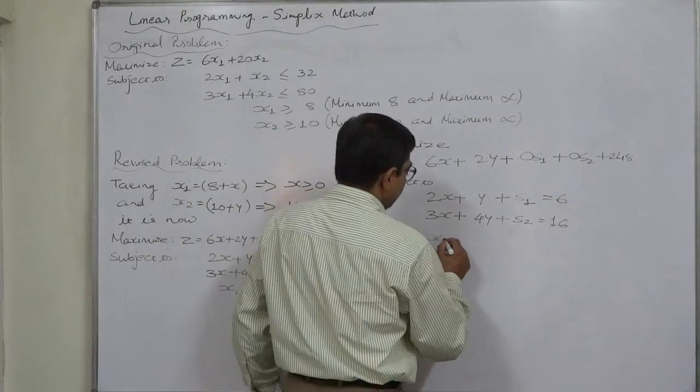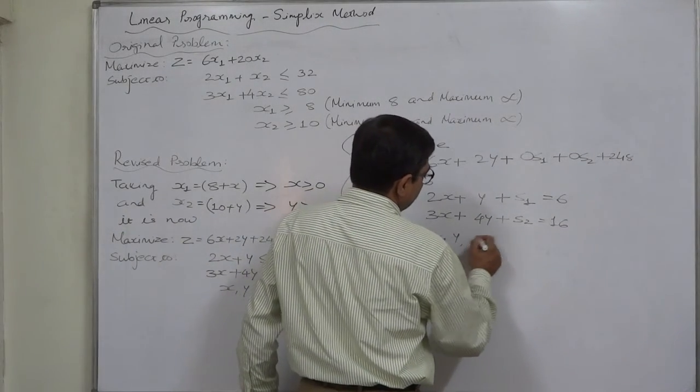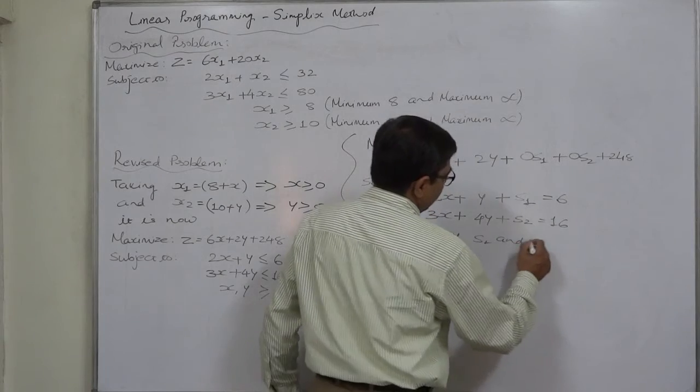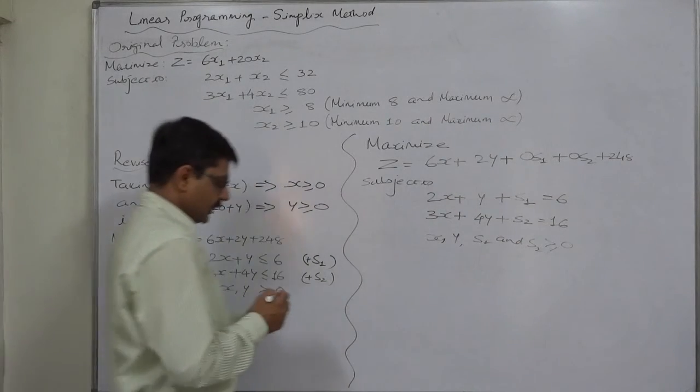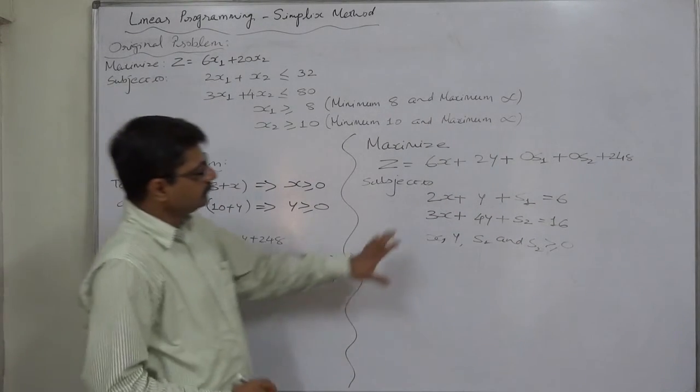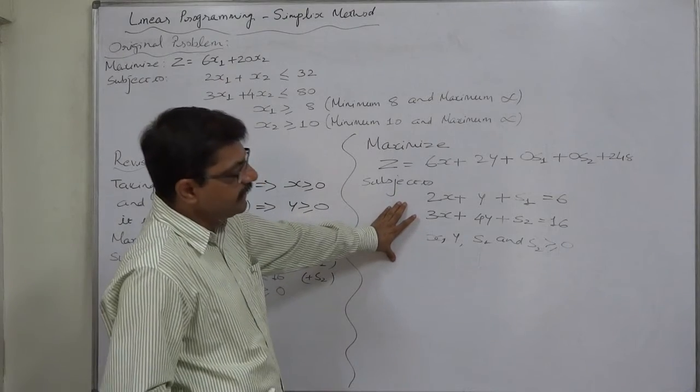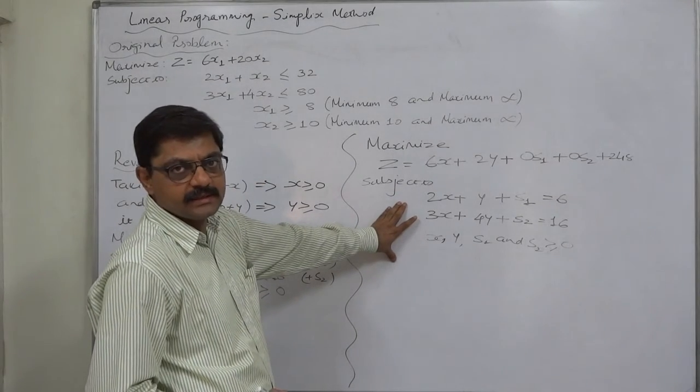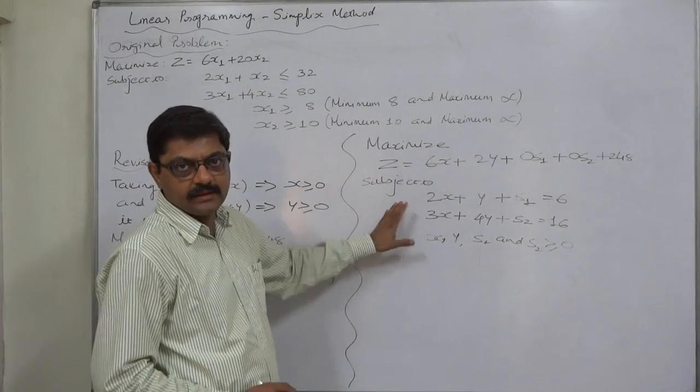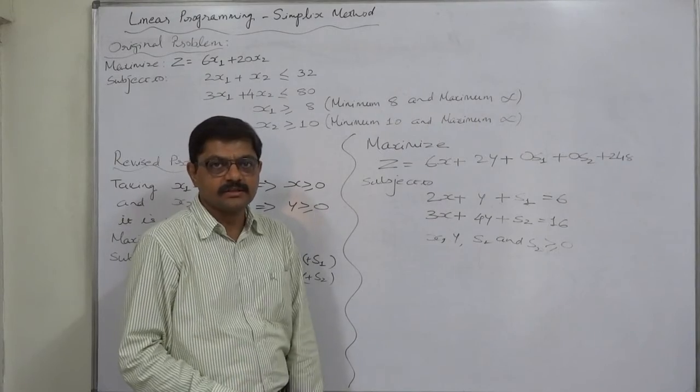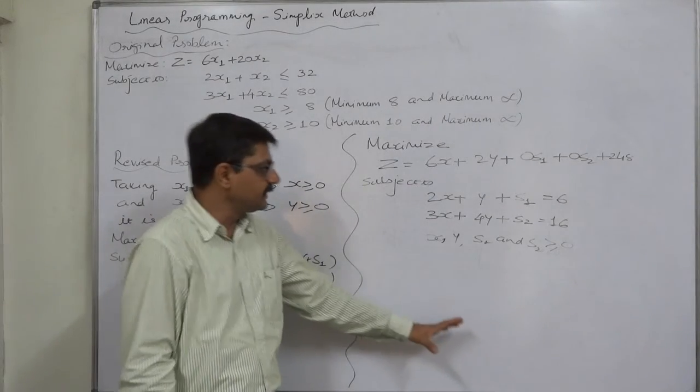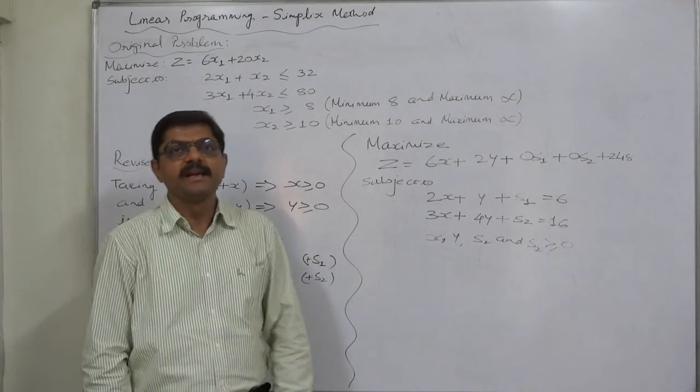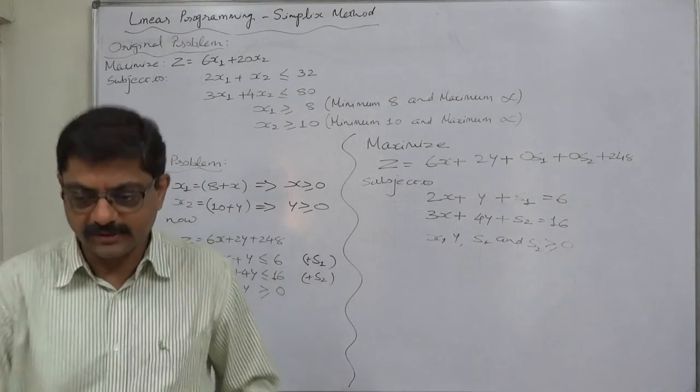And now we have four variables x, y, s1 and s2 all are non-negative. Now we can solve this problem having two equalities through simplex method. In the next two lectures we are going to discuss the solution of this method by simplex method. Thank you very much.